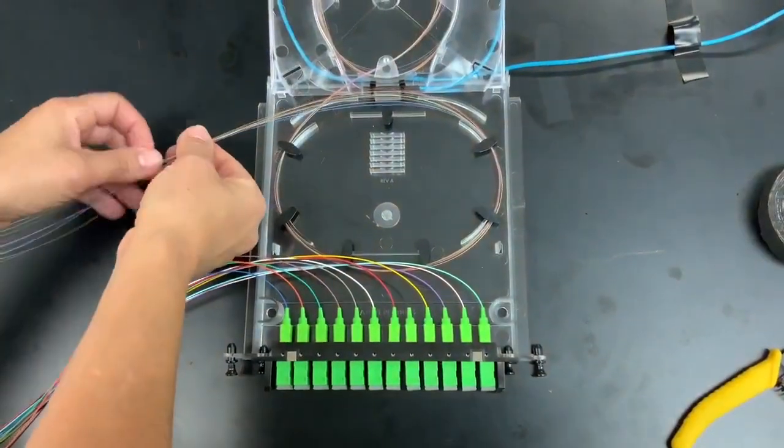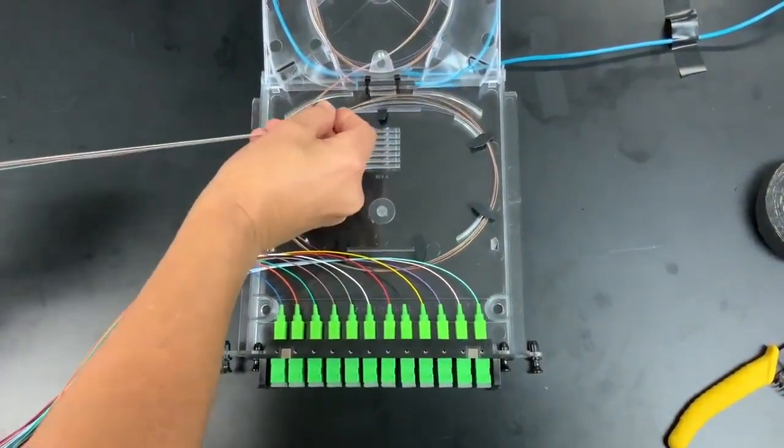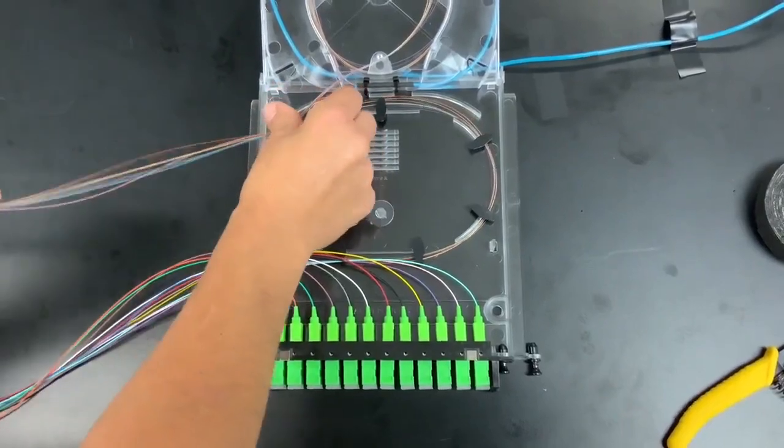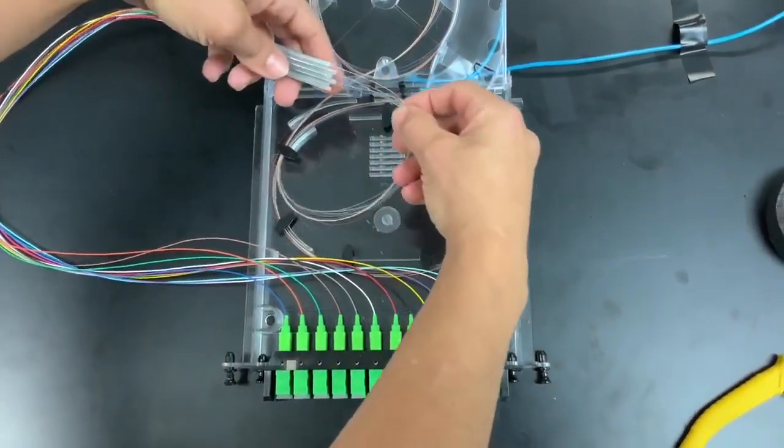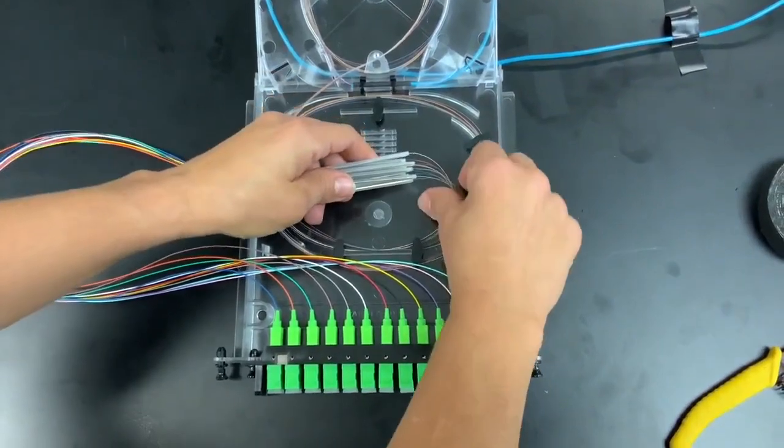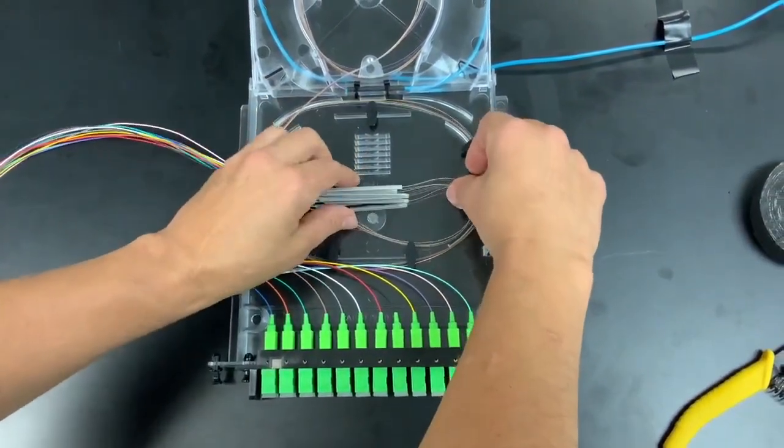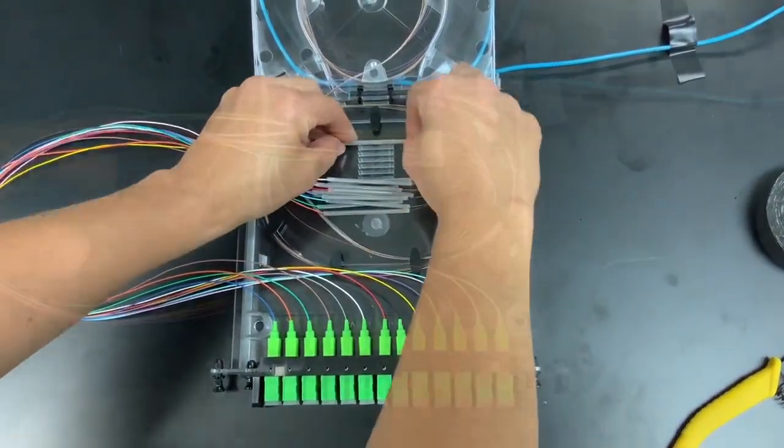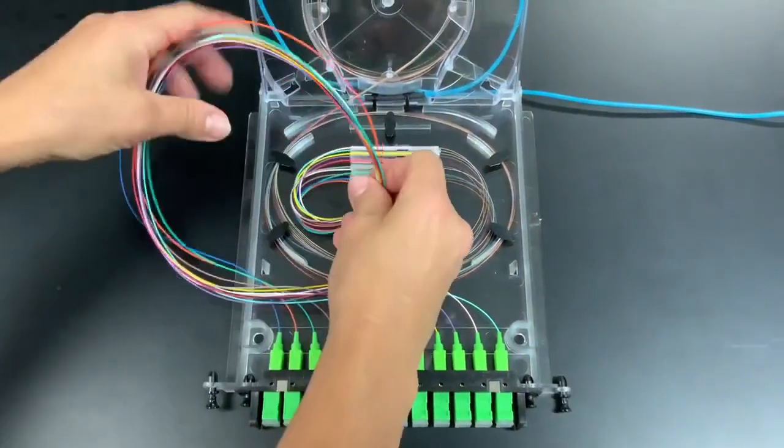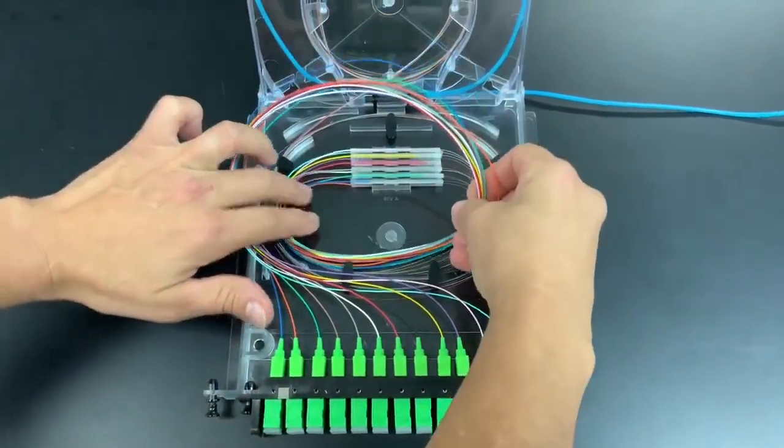After completing all the splices, carefully route the fused fibers back to the splice holder starting with the 250 micron fibers. Place the splice sleeves in the placeholder location. Note that the splice sleeves are stacked two per splice holder locations. Then continue routing the 900 micron fibers on the inside of the raceway.